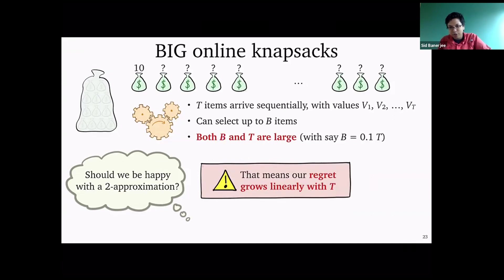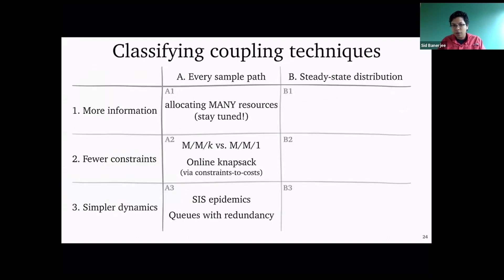The natural question is: can we do better? If we have a big online knapsack, is there a different way of coupling the system such that we can get regret that is not linear in T? That is essentially going to be the theme of the next in-depth study, where we'll show a completely different way of coupling that uses more information about the process and yields much better bounds when allocating many resources.